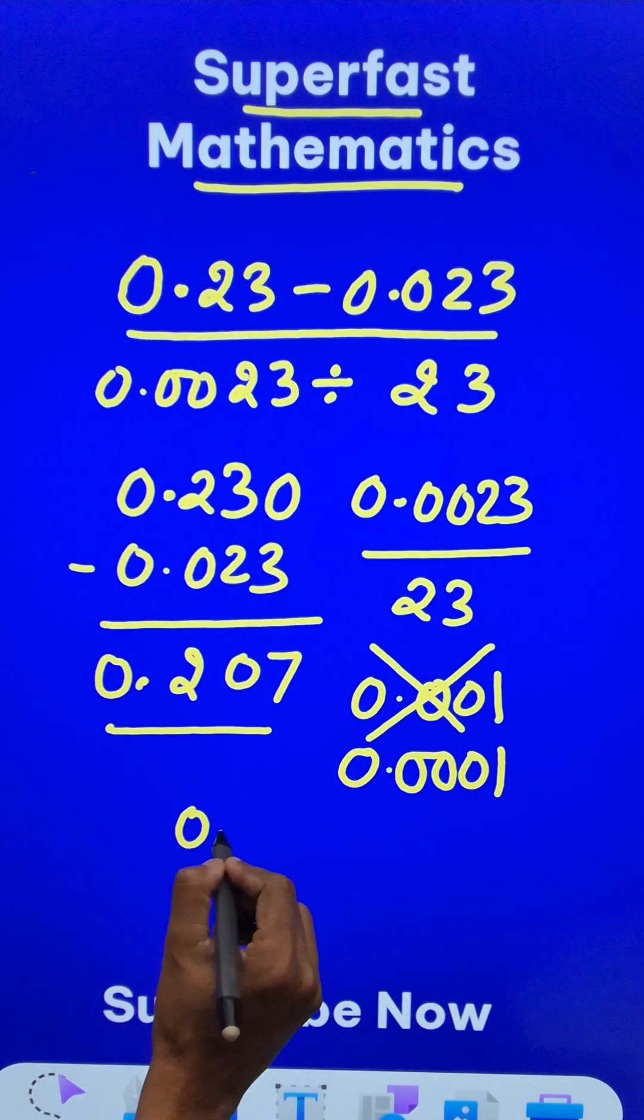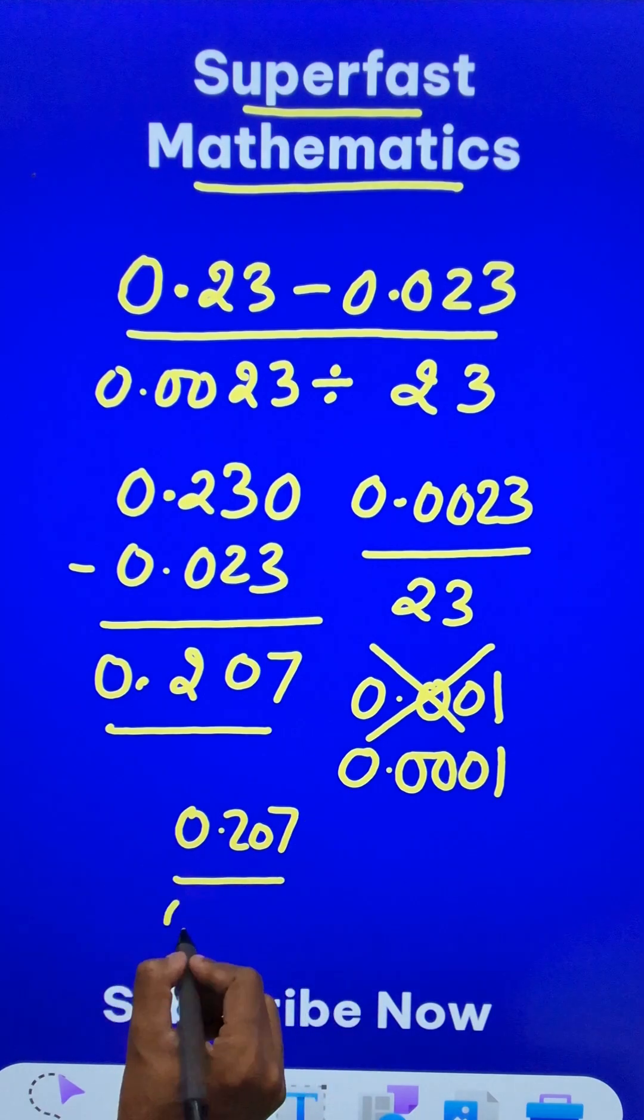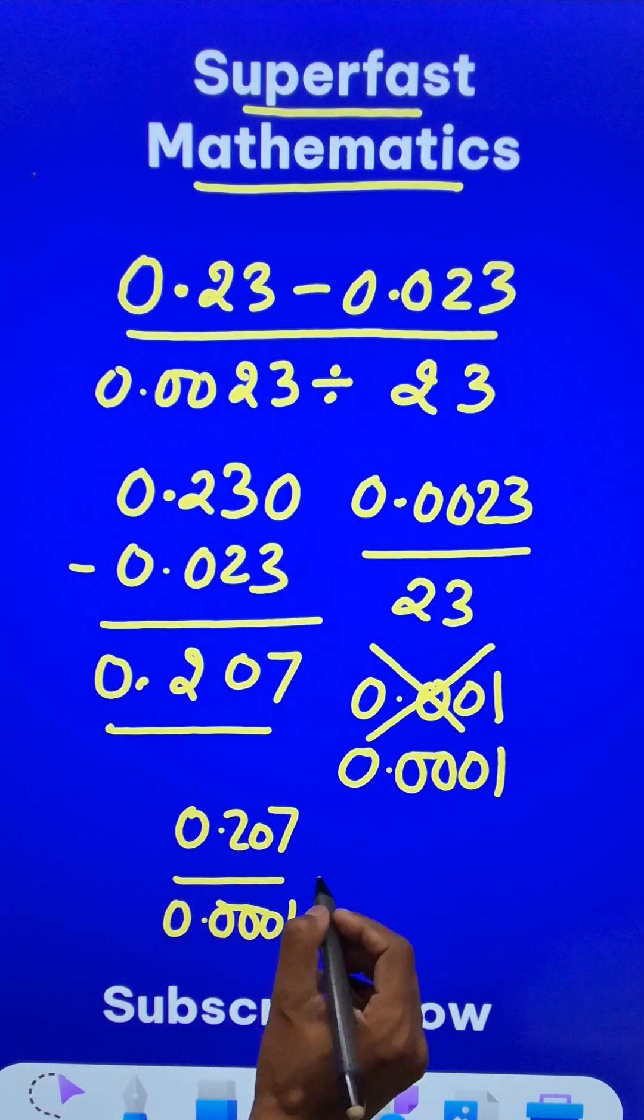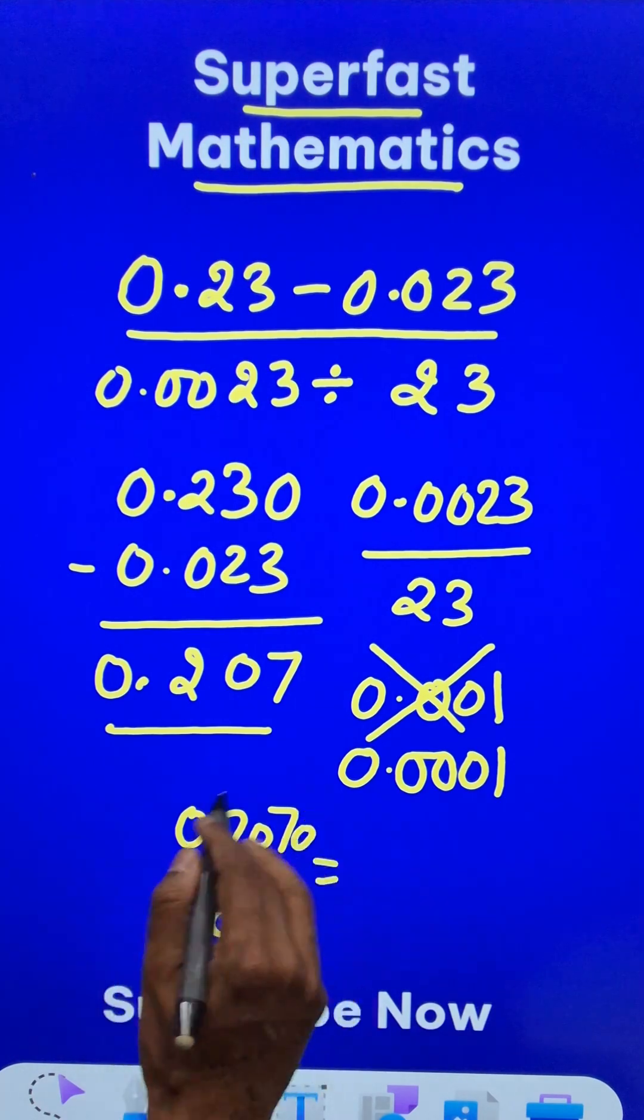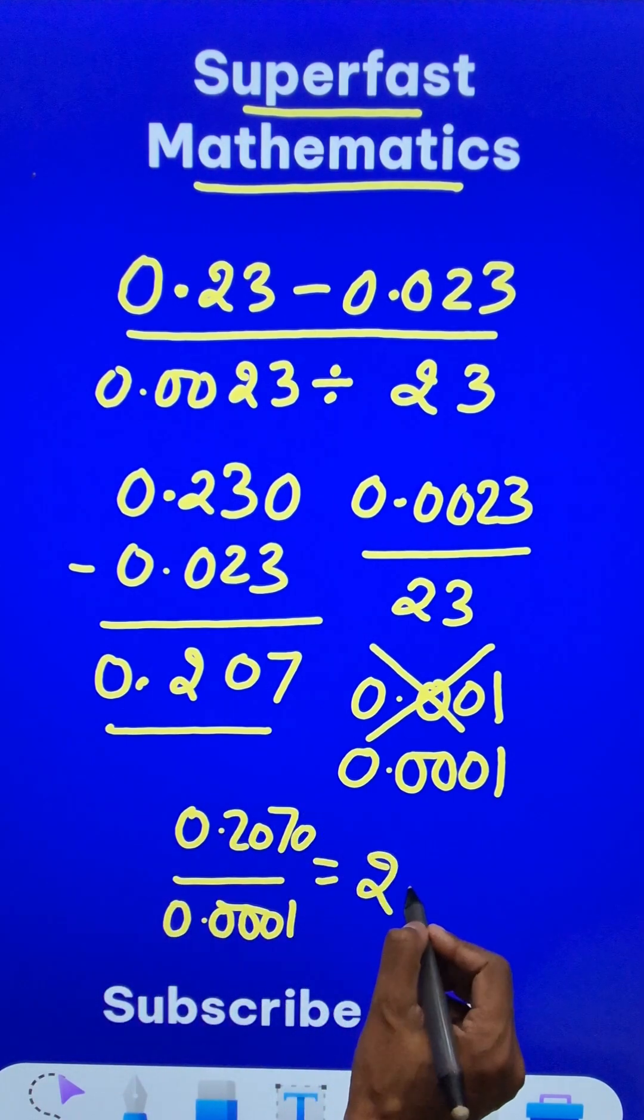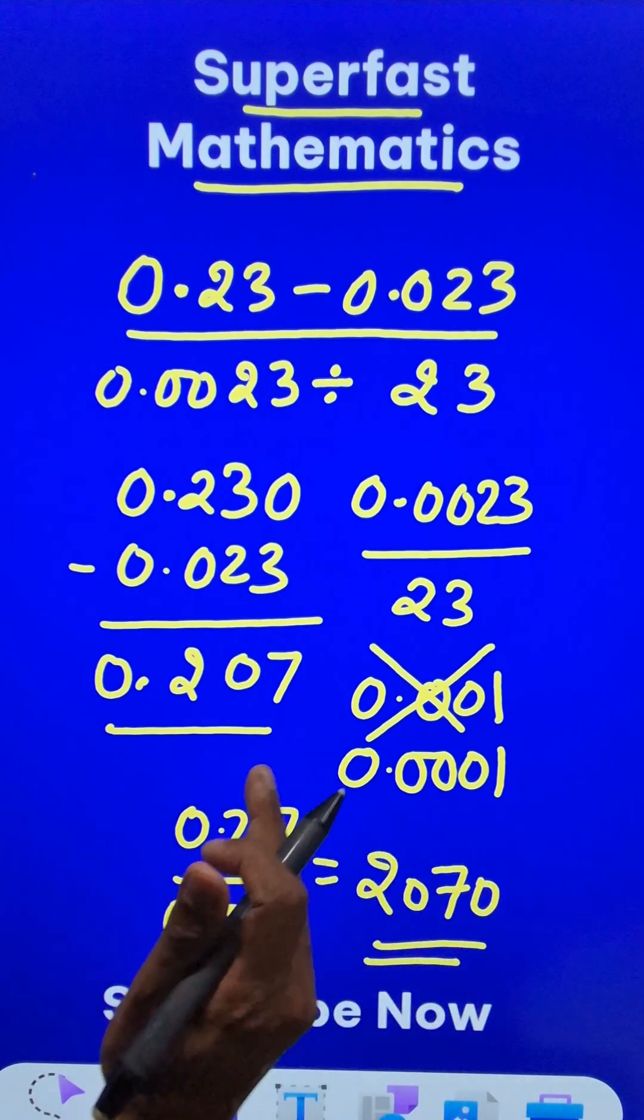So the expression reduces to 0.207 divided by 0.0001. When you remove the decimal, you have to put a 0 here because there are 4 digits after the decimal in the denominator. Now safely remove the decimal, and you get 2070 as the answer.